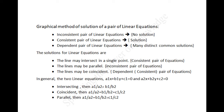If the lines are coincident, the equations have infinitely many solutions, that is, a dependent consistent pair of equations. In general, for the lines represented by a1x plus b1y plus c1 equal to 0 and a2x plus b2y plus c2 equal to 0: if intersecting, then a1/a2 is not equal to b1/b2; if coincident, then a1/a2 equal to b1/b2 equal to c1/c2; if parallel, then a1/a2 equal to b1/b2 but not equal to c1/c2.